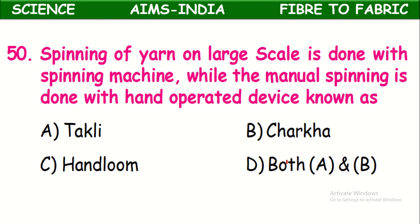Spinning of yarn on a large scale is done with the spinning machine, while manual spinning is done with a hand-operated device known as the Charka — also called Takli. Yarn is made from fiber by using these hand-operated devices: Takli and Charka.